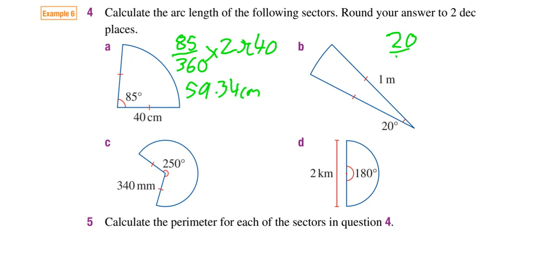So, 20 over 360 times 2 pi, and then you have the radius, which is 1 meter. And then when you multiply that all out on your calculator, you're going to get 0.35 meters.